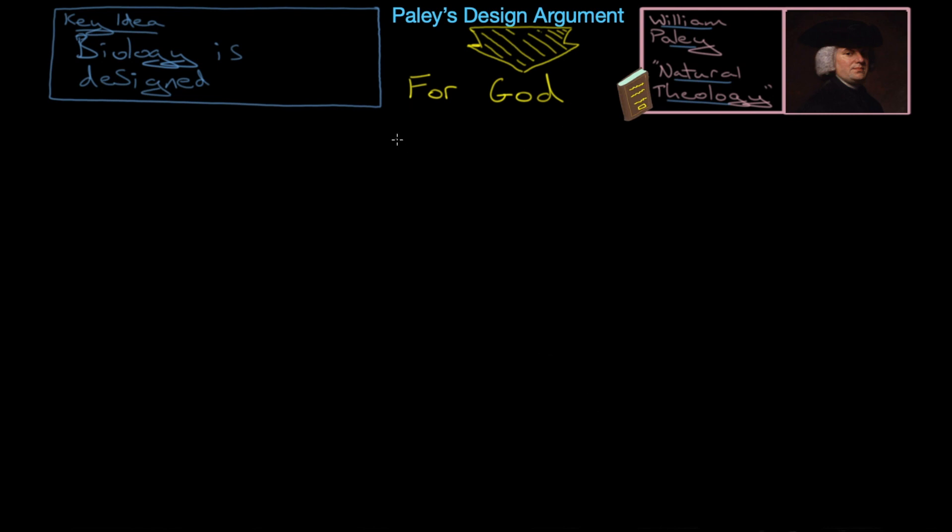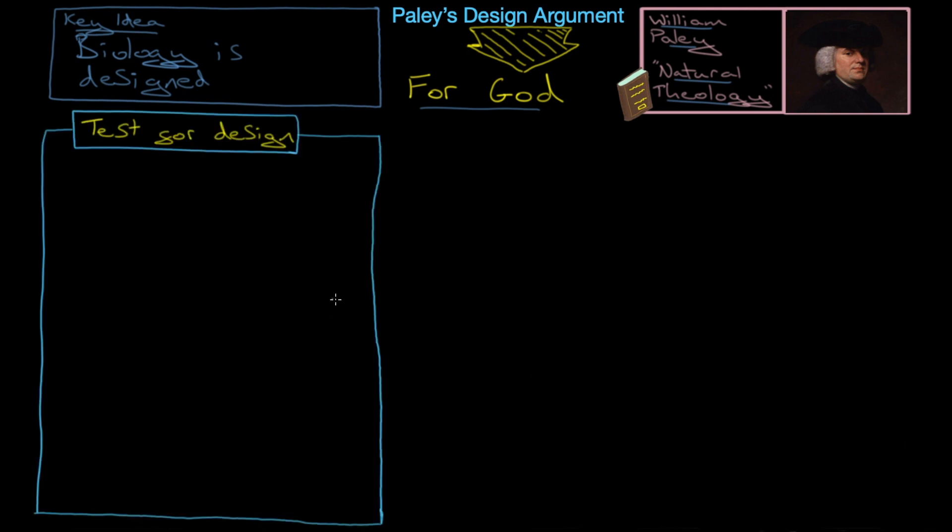And therefore that they are designed and they are designed by God. Now, before he gets there, he tries to establish his test for design. And this, what we're about to talk about now, is his reasoning for his test for design. A test for design is essentially a mechanism that should identify only designed things and not undesigned things. It can reject as not designed things that actually happen to be, but it should only positively identify things that actually are designed.